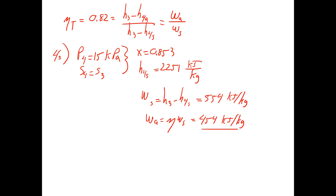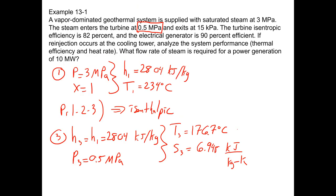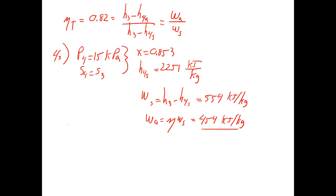Now the problem statement is asking, what would be the flow rate of steam for this system required for a power generation of 10 MW? Well, if we were to go ahead and do that math, the actual work rate would equal the mass flow rate times the specific work rate.